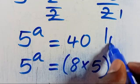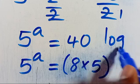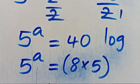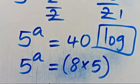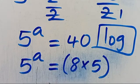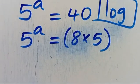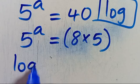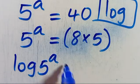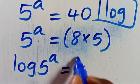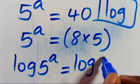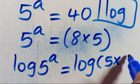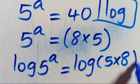Let's introduce log to both sides of this expression. We have 5 to the power of A equals 5 times 8, which is 40.